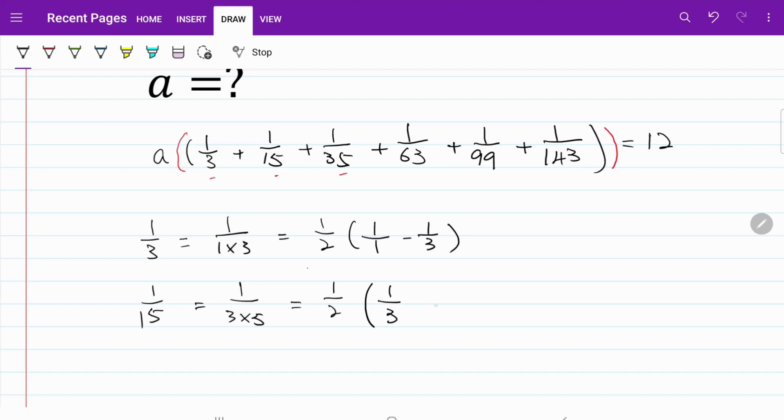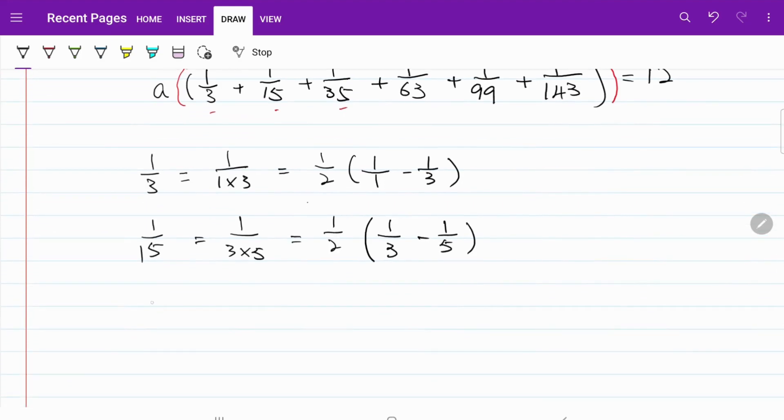1 over 35, that's equal to 1 over 5 multiplied by 7 which is also equal to 1 over 2 multiplied by 1 over 5 minus 1 over 7. I hope you can see the pattern,